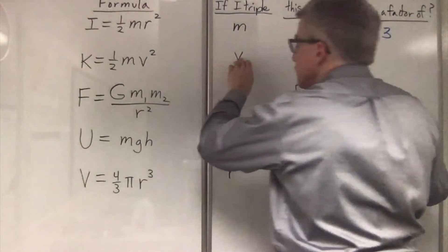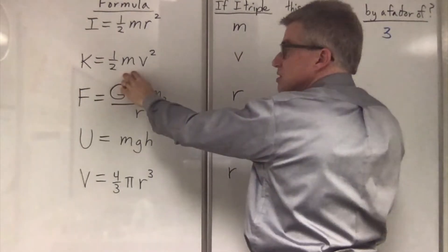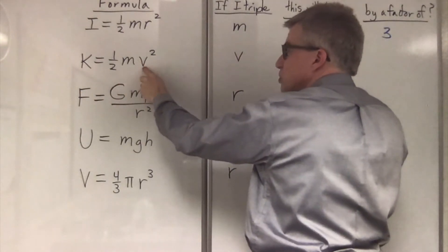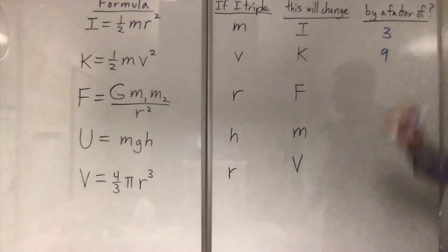1 half mv squared. If I triple v, what happens to k? Assuming the m is constant. If v is tripled, you imagine a 3 there. 3 squared is 9. It will be multiplied by a factor of 9.